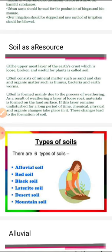With regard to the transported variety of soil, this variety is transported and deposited by rivers. You can take the example of alluvial soil, where the sediments have been transported from the mountainous region and deposited in the plain area. Alluvial soil is a good example of transported variety, and black soil is an example of residual variety of soil.